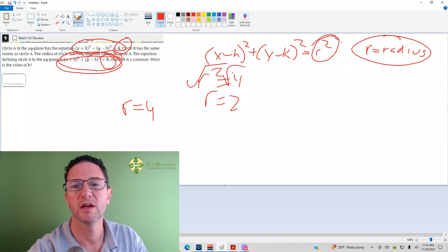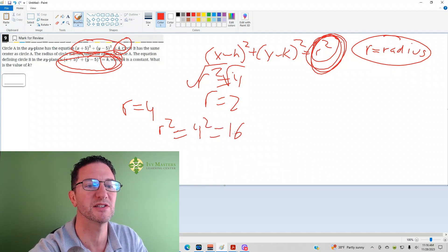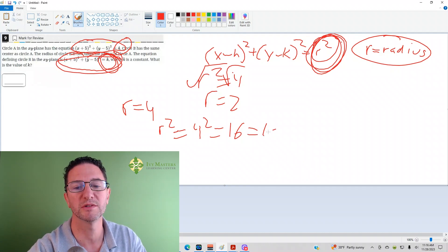If the radius equals 4, keep in mind r squared is isolated, so r squared is going to equal 4 squared, which equals 16. So your k equals 16.